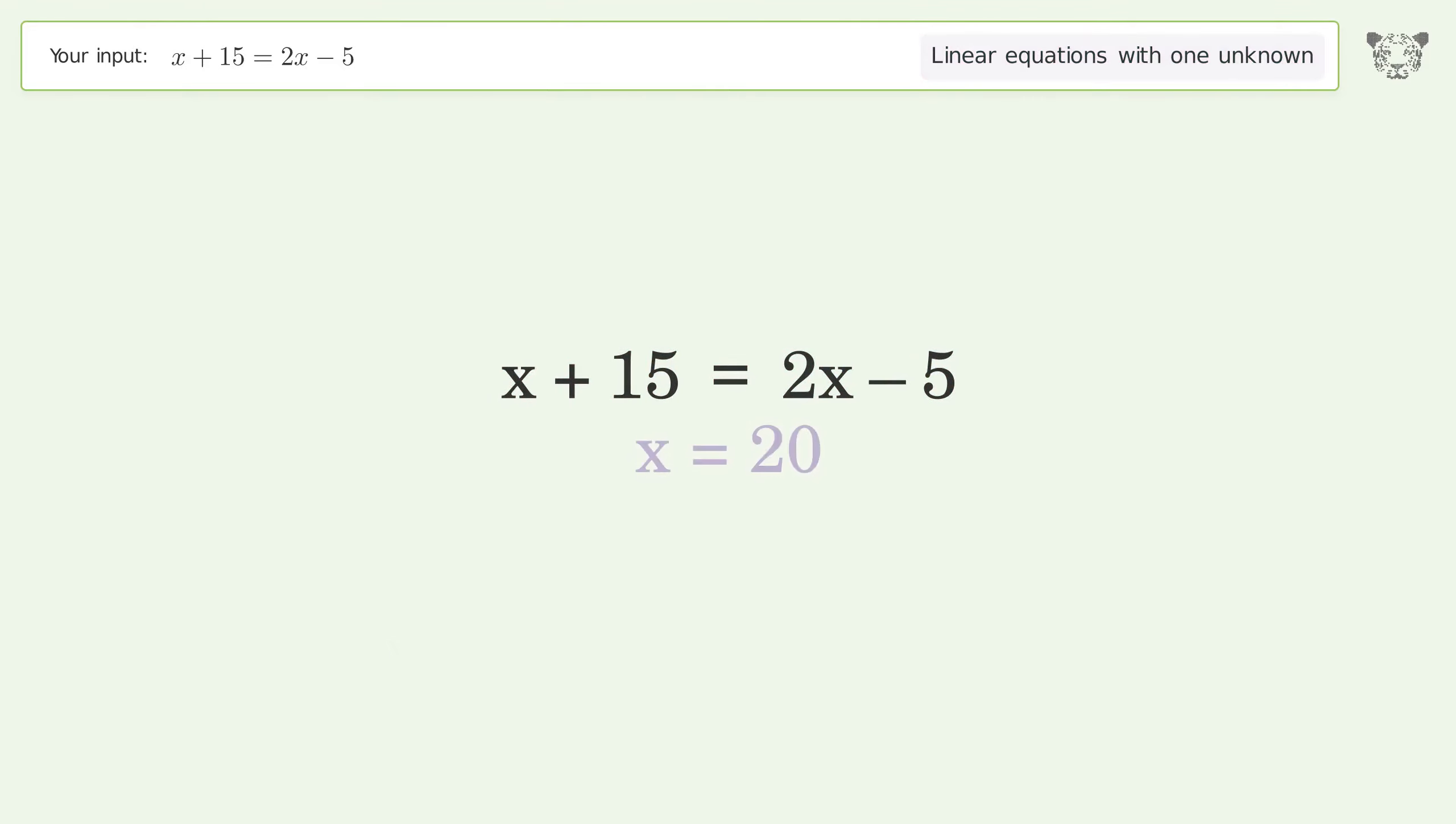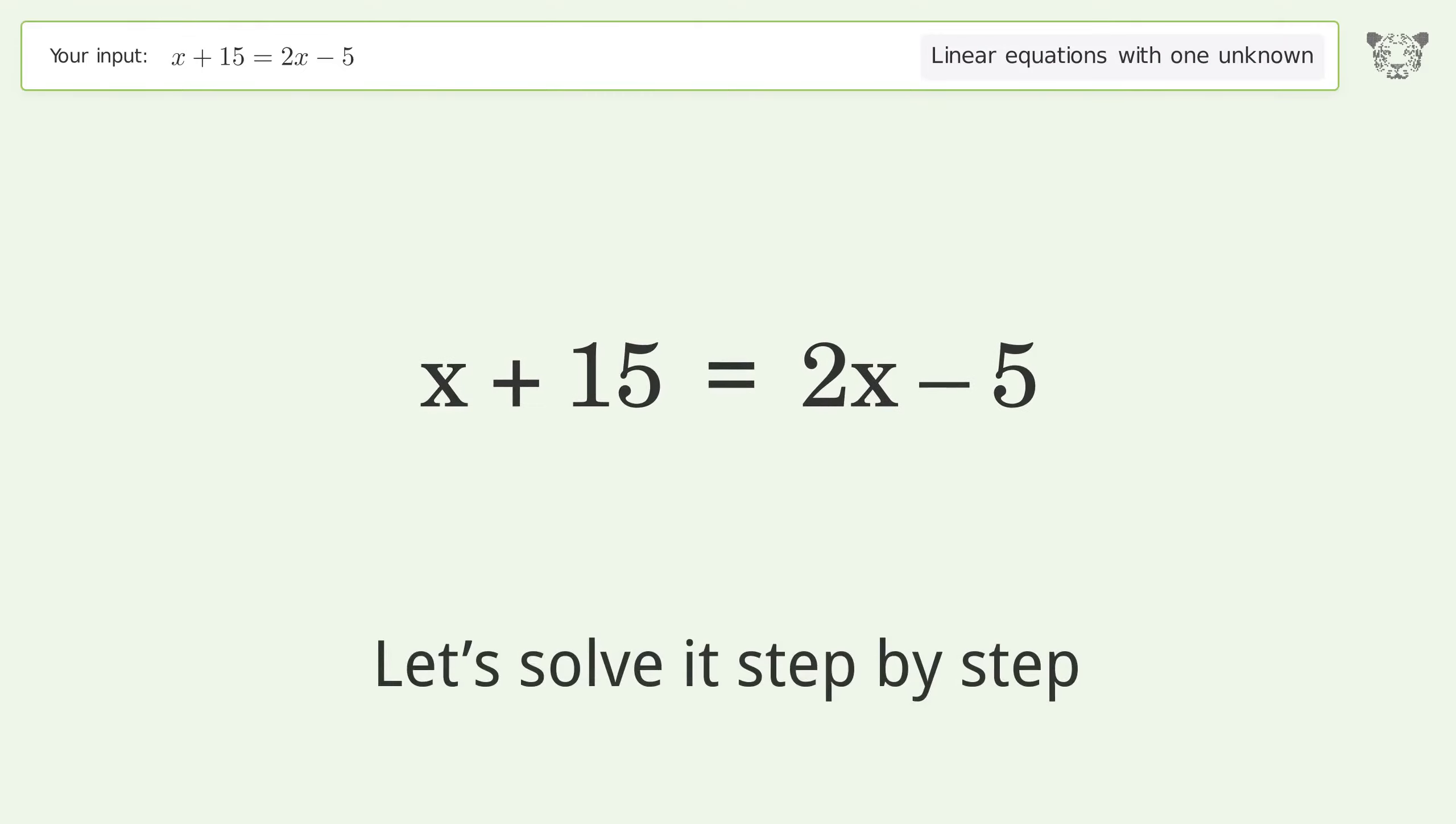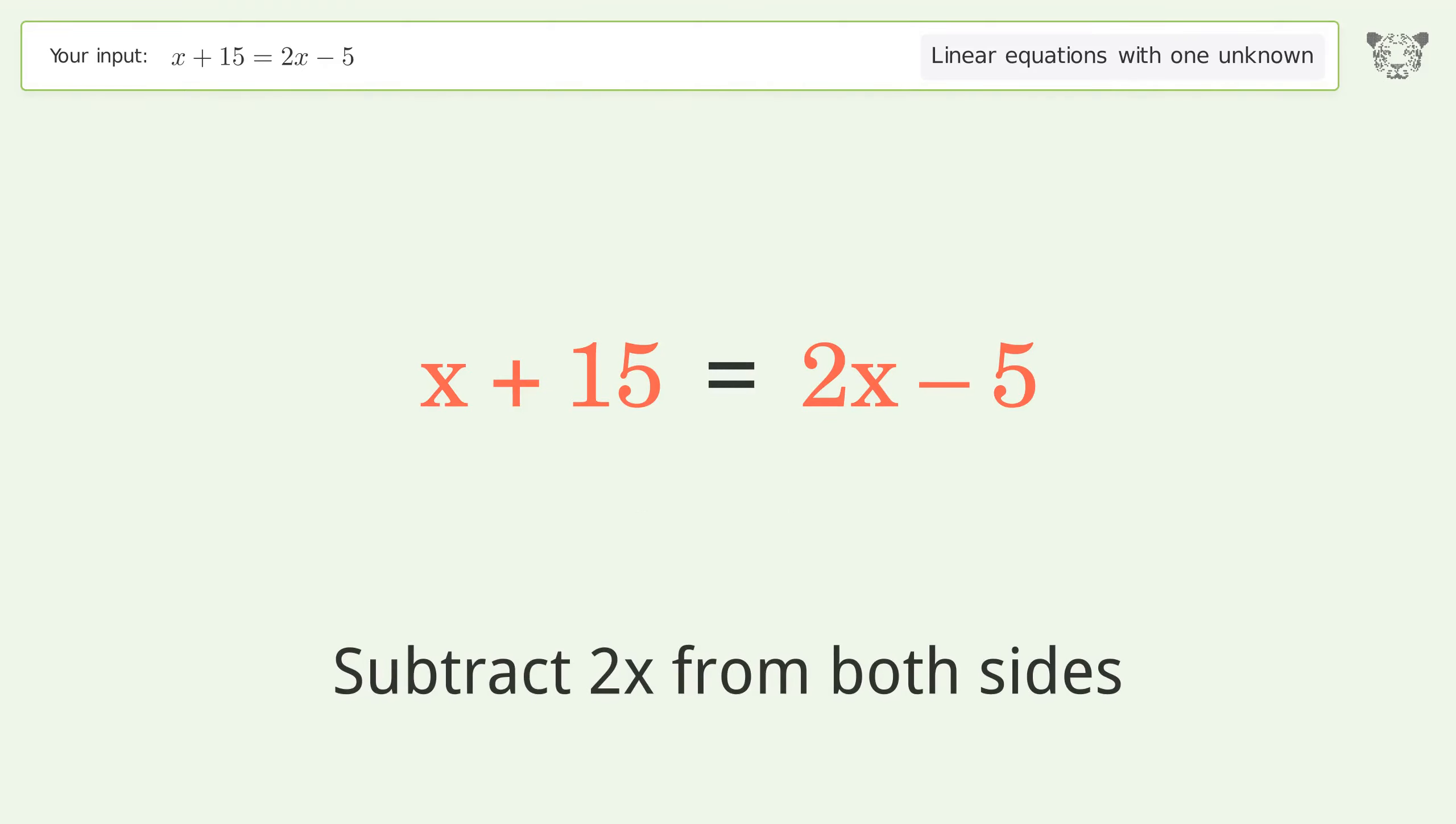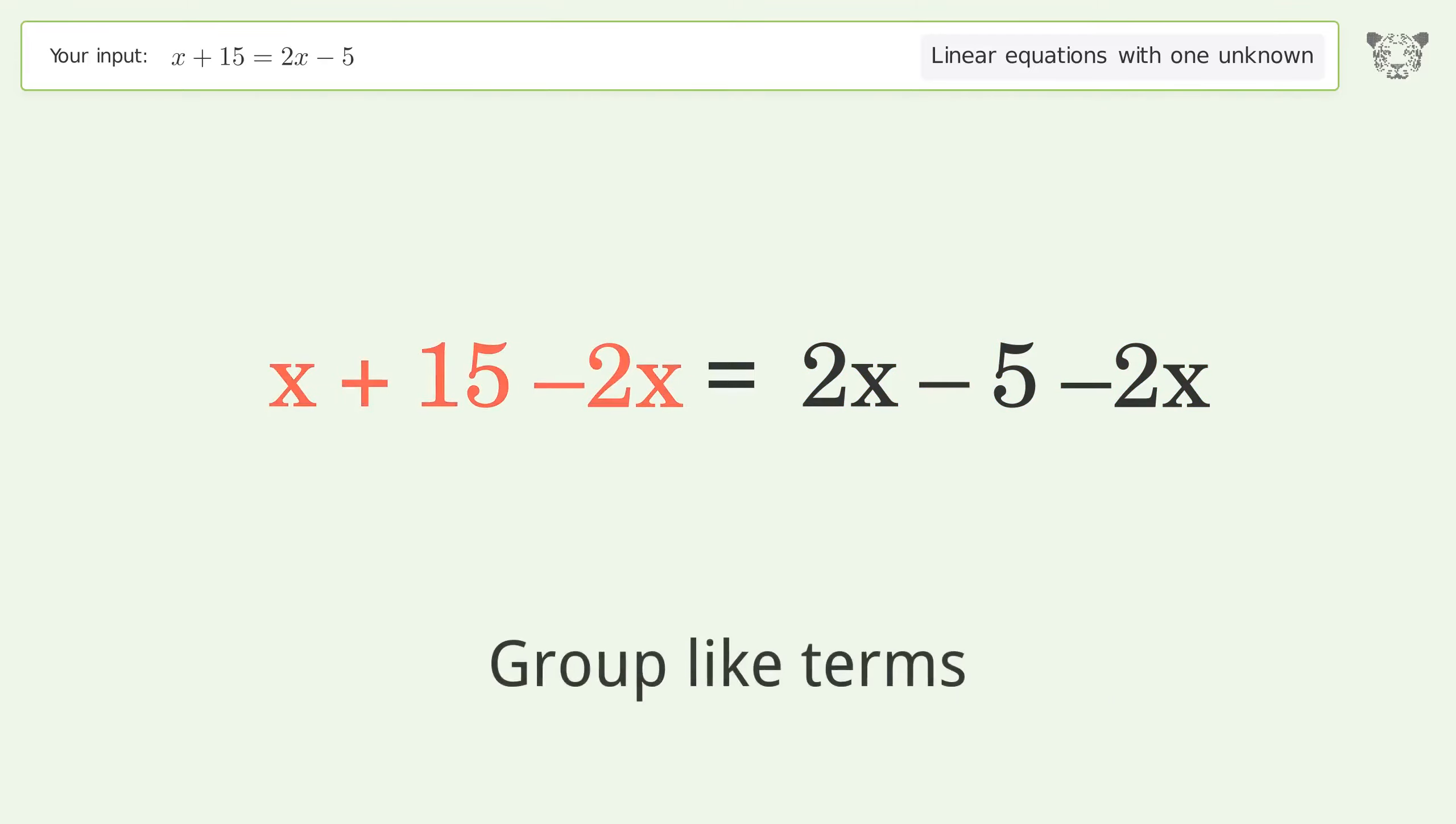You asked Tiger to solve this. This deals with linear equations with one unknown. The final result is x equals 20. Let's solve it step by step. Group all x terms on the left side of the equation. Subtract 2x from both sides.